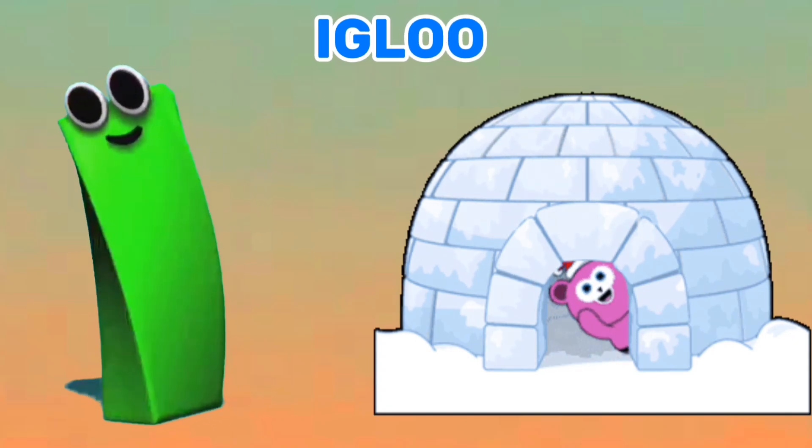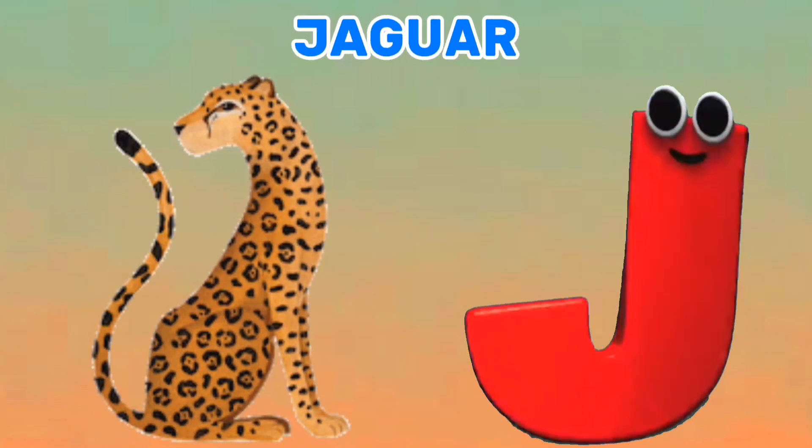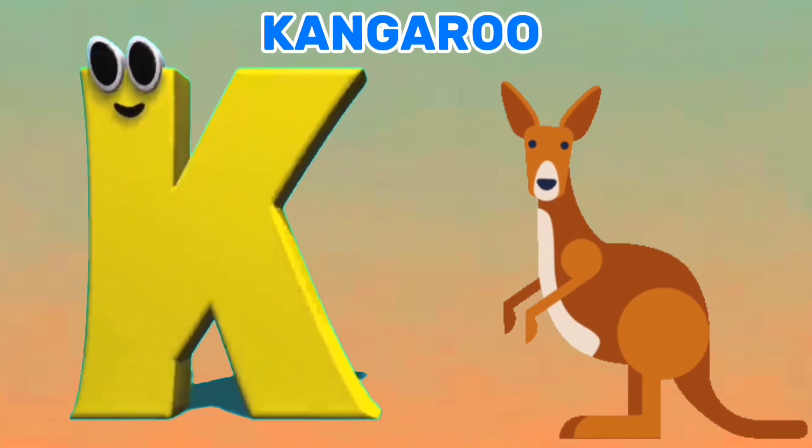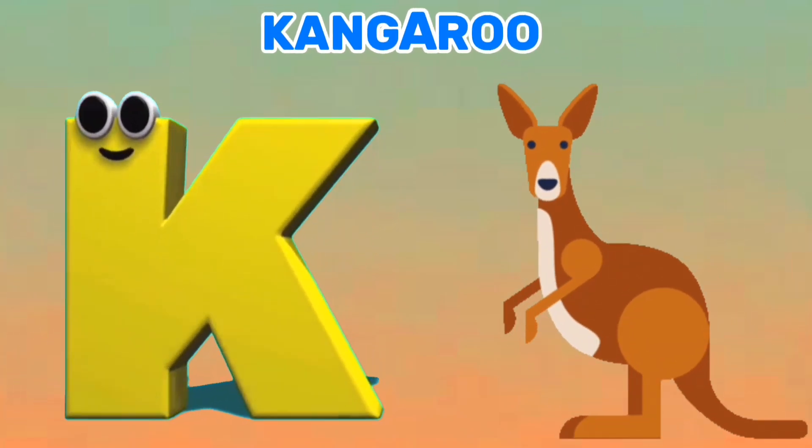I is for Igloo. E, E, Igloo. J is for Jaguar. G, G, G.